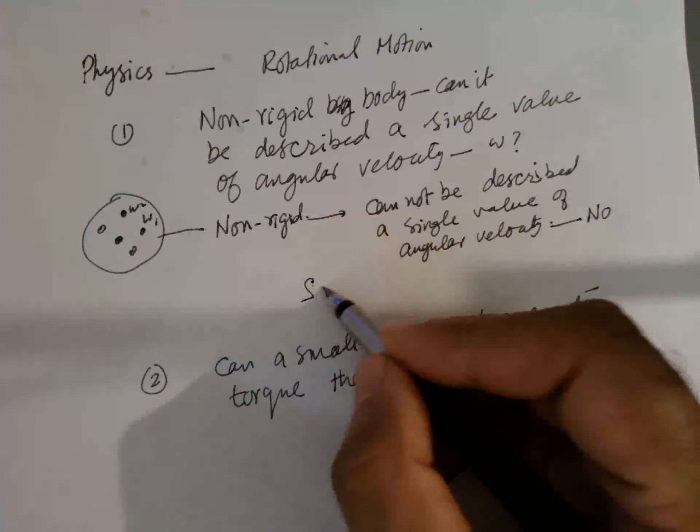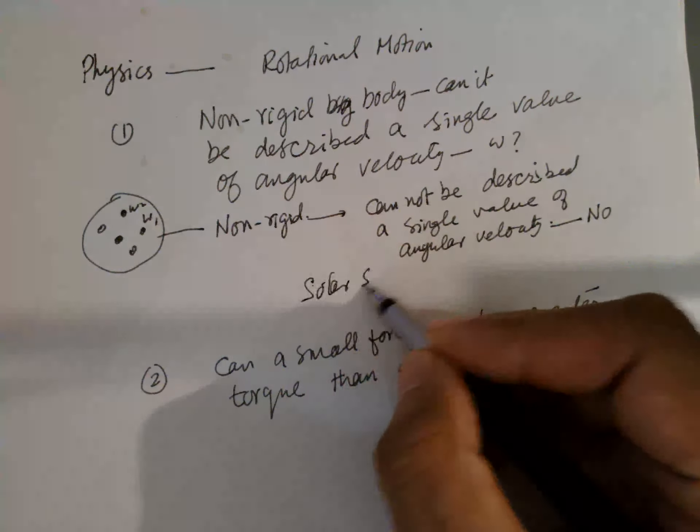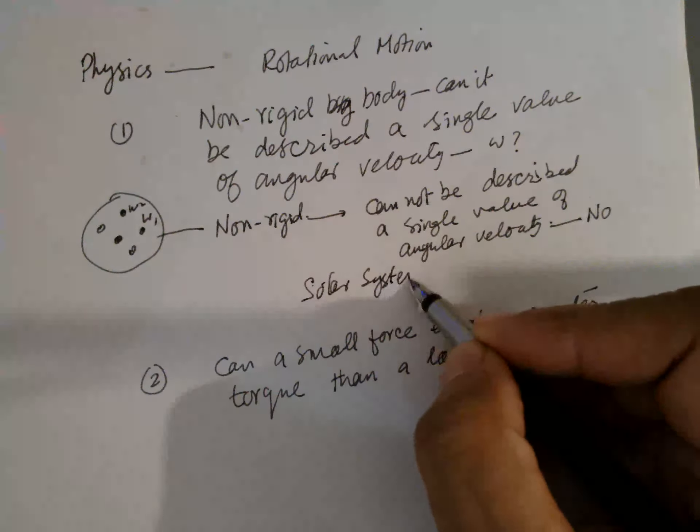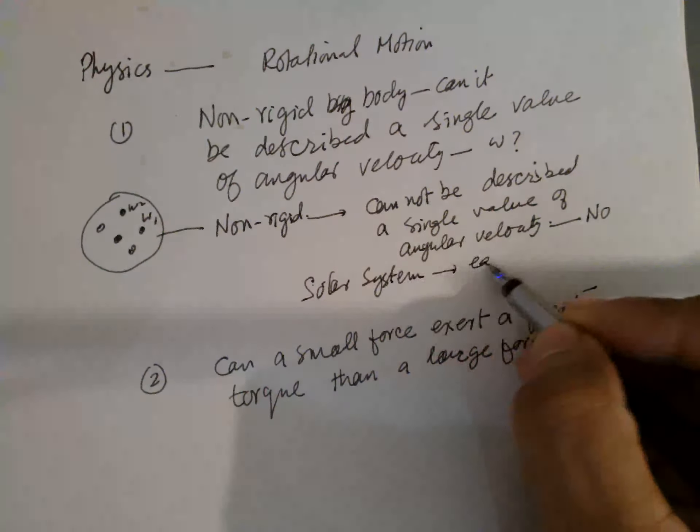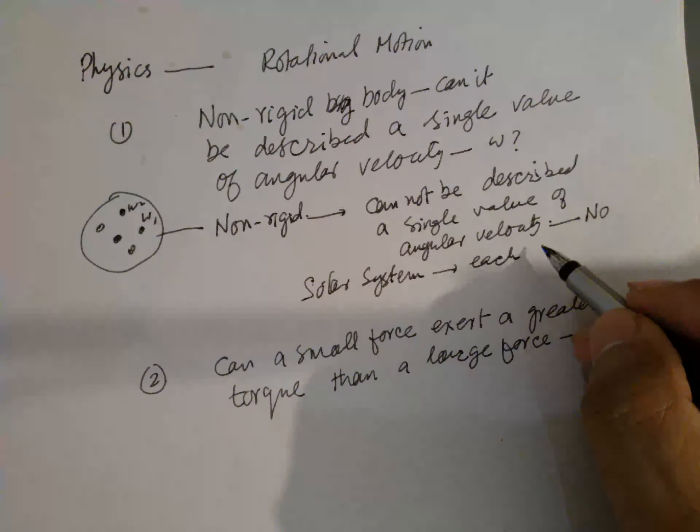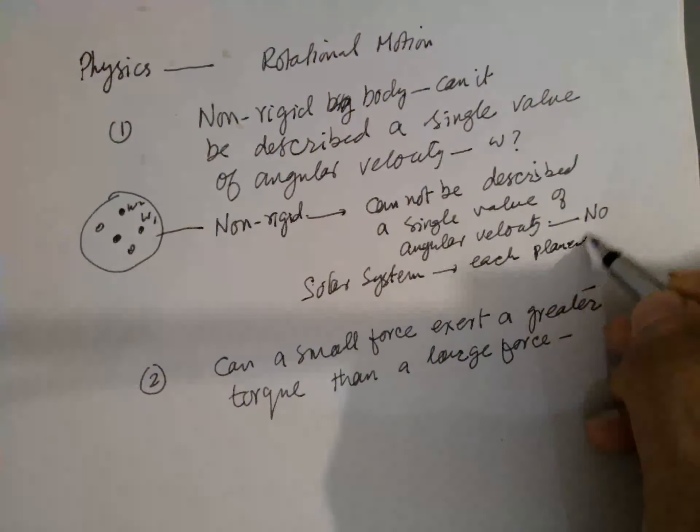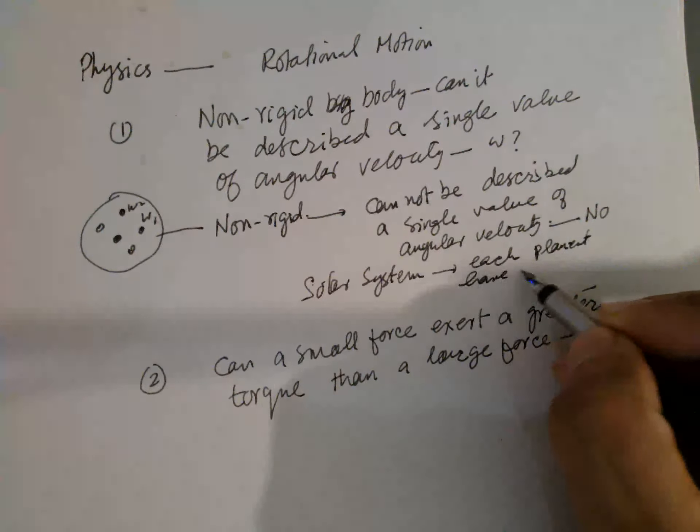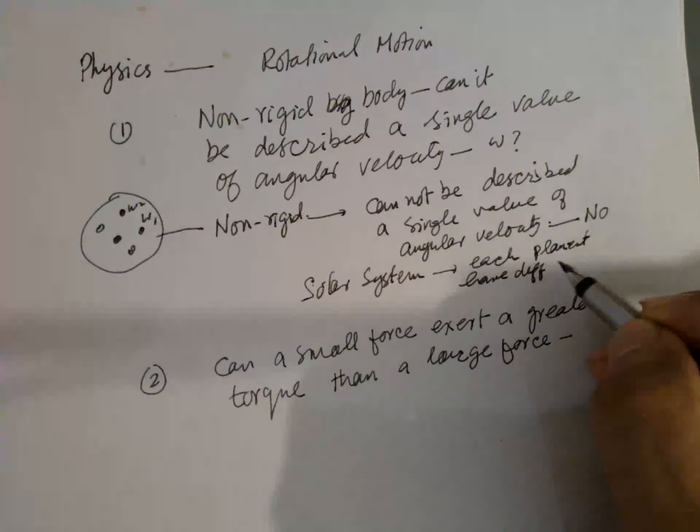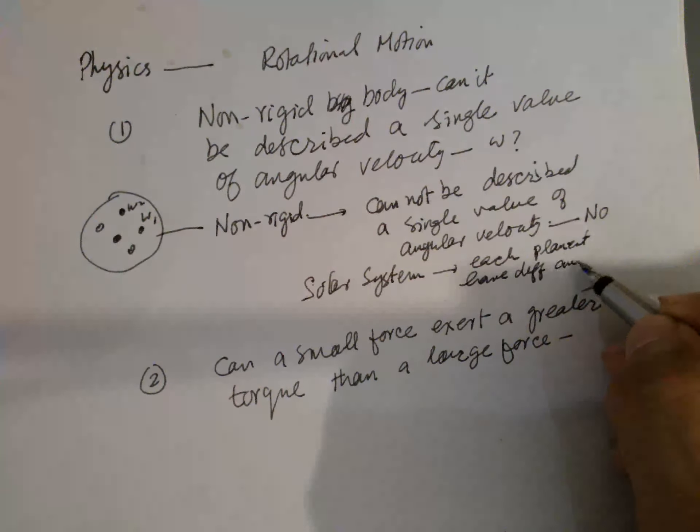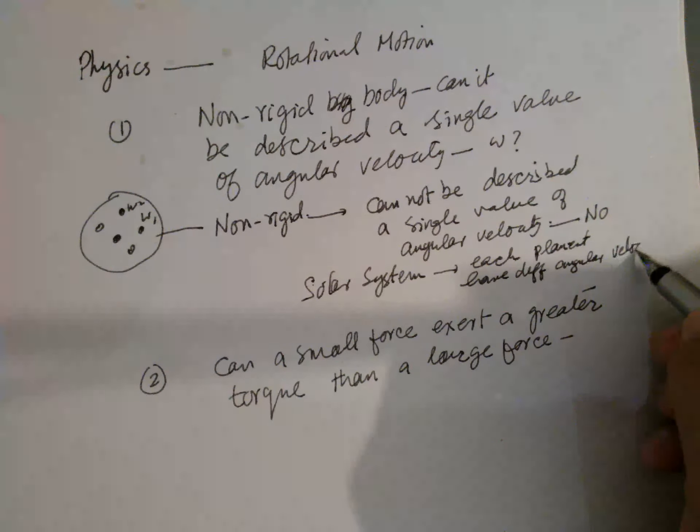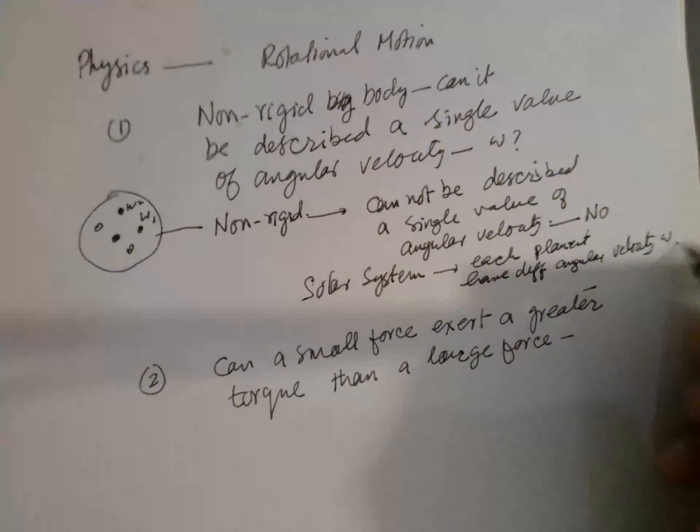Similarly, this is a solar system. Each one has a different angular speed. Planets have different angular velocities, omega.